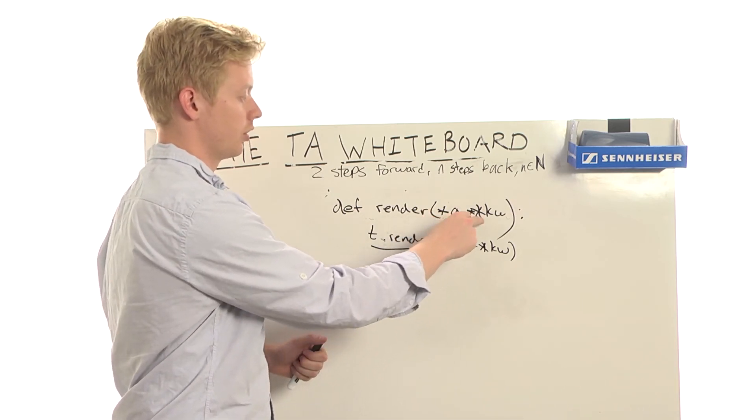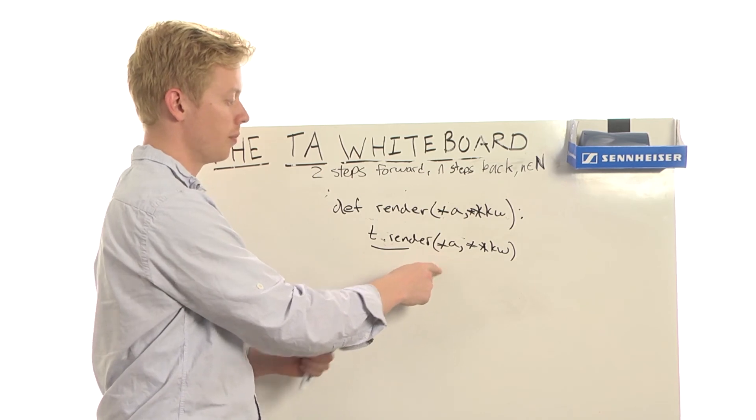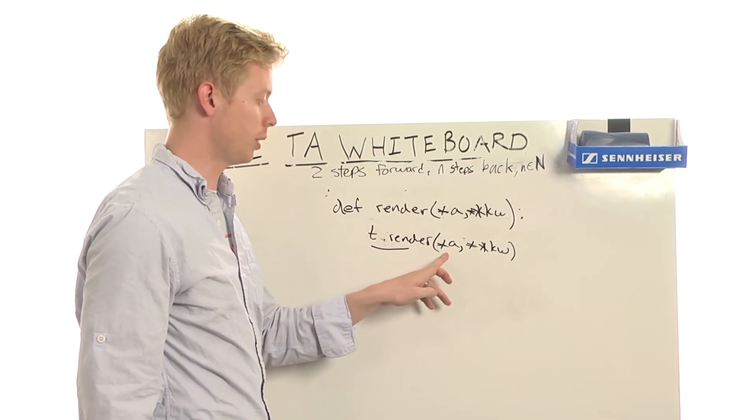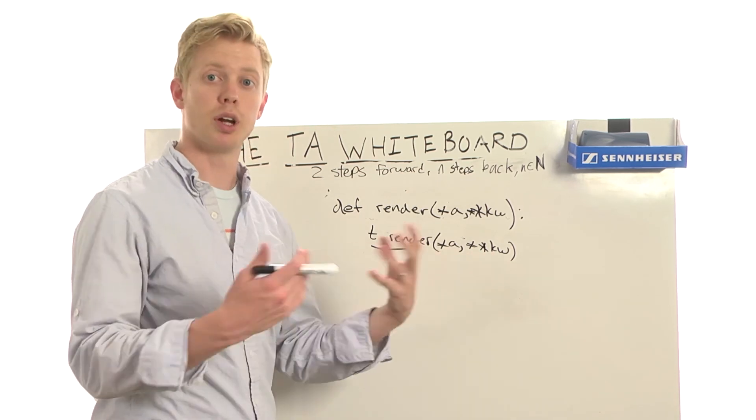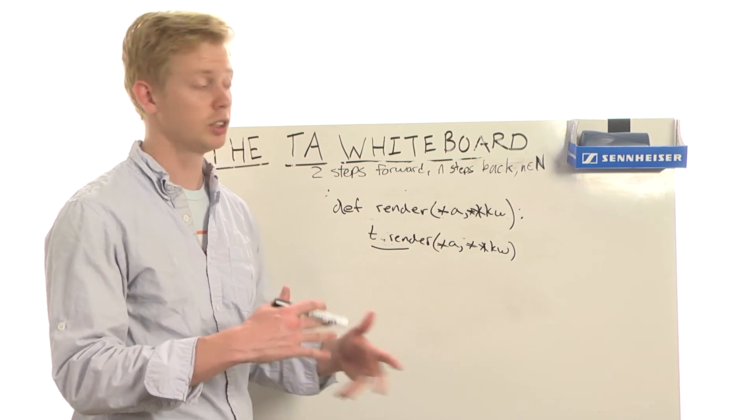Now, so there's two uses of stars and star star. One is in the function definition, which we talked about before, and the other is in the function call. If you have a tuple or a dictionary, and you put them in a function call with the star and the star star kw, it breaks those data structures apart and passes them in as parameters, which is really handy.